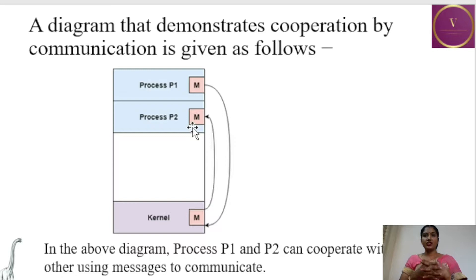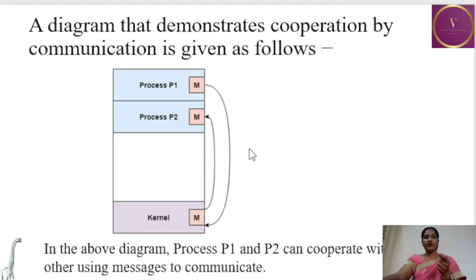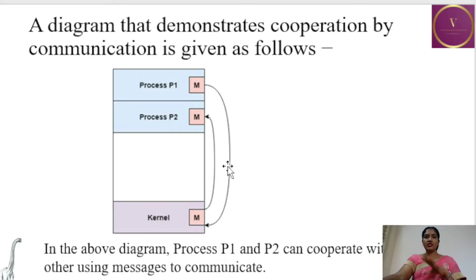In the diagrammatic representation of cooperation by communication, process P1 sends the message to the kernel and process P2 receives the message from the kernel. P1 and P2 can cooperate with each other using messages to communicate. If both are waiting for each other, there is deadlock, and if one is not sending a message while the other is waiting, it leads to starvation. These are the two methods of cooperating processes.